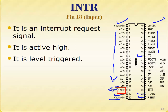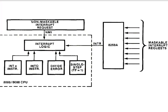Now let's talk about interrupt and non-maskable interrupt. There are two things: one is the interrupt pin number 18 and pin number 17 which is non-maskable interrupt. In the 8086 we have two interrupt lines — one for the non-maskable interrupt and one for the maskable interrupt.